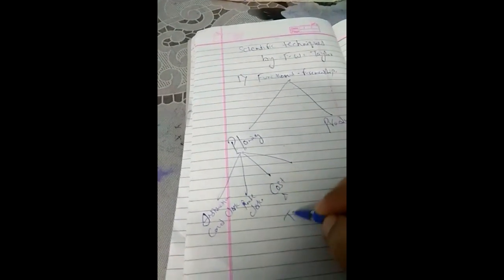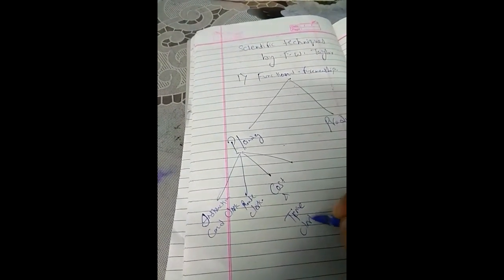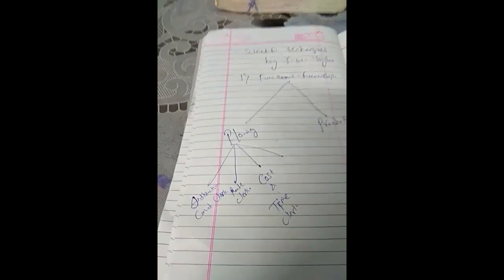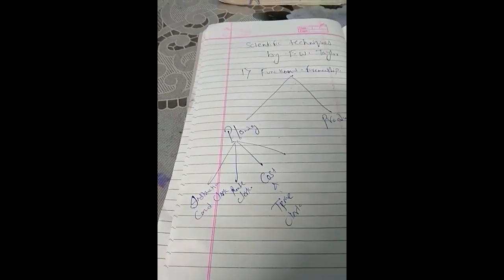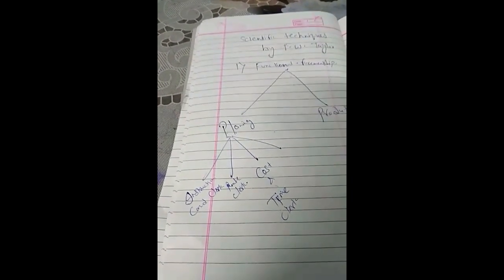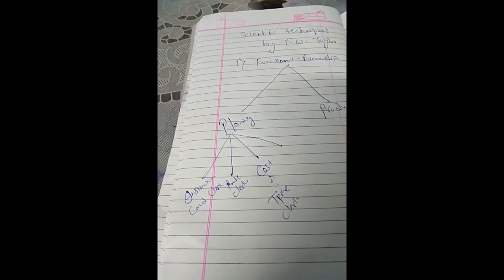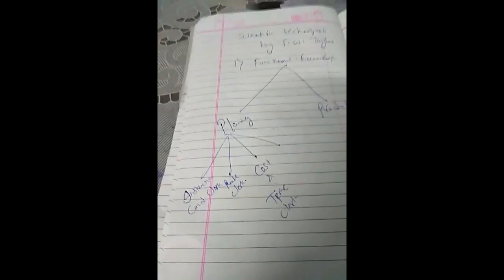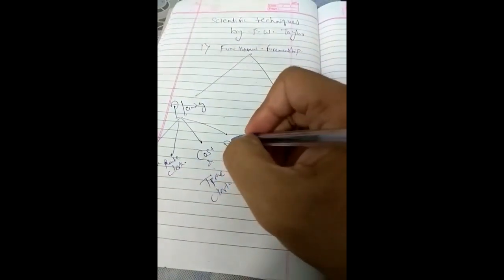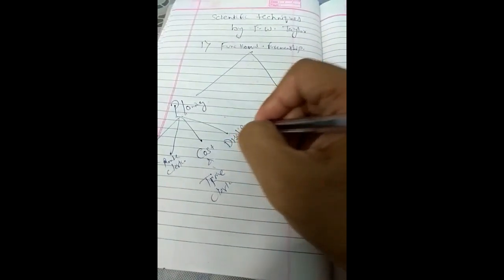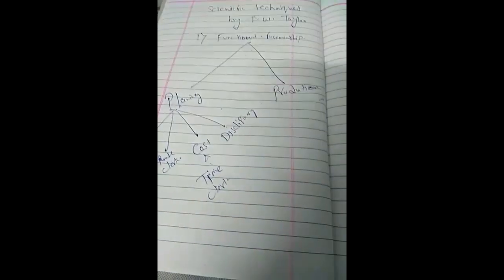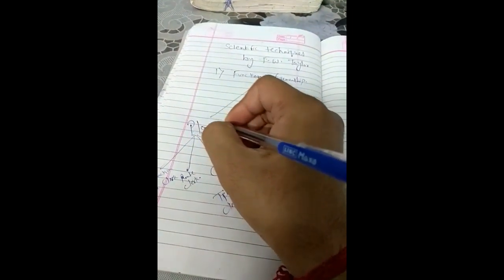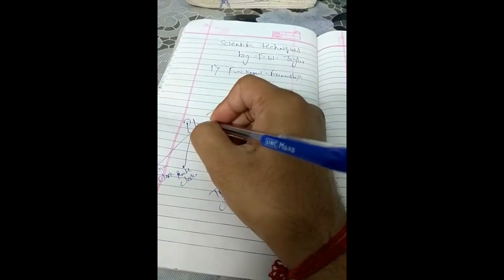Next is the Cost and Time Clerk. This foreman is responsible for getting the work done on time and for making a cost sheet and time sheet showing how much cost is incurred by each employee and how much time they take to complete their task. The last foreman in the planning department is the Disciplinarian, who is responsible for maintaining discipline in the organization.